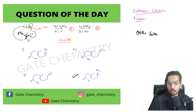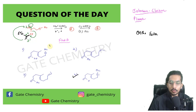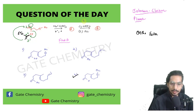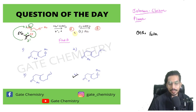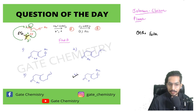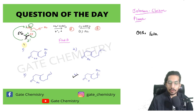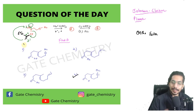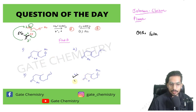After reducing the ester to an alcohol with LiAlH4, you add pyridinium chlorochromate (PCC). PCC is a chromium-based oxidizing agent that selectively oxidizes alcohols while avoiding over-oxidation — it oxidizes a primary alcohol to an aldehyde. Reducing the ester gives a primary alcohol, and oxidizing that primary alcohol with PCC gives an aldehyde. Oxidizing a secondary alcohol with PCC would give a ketone.